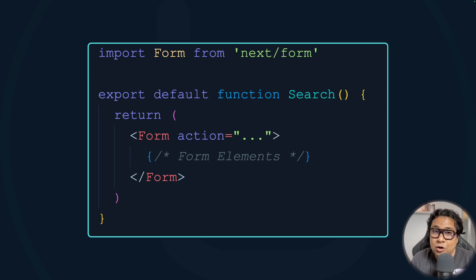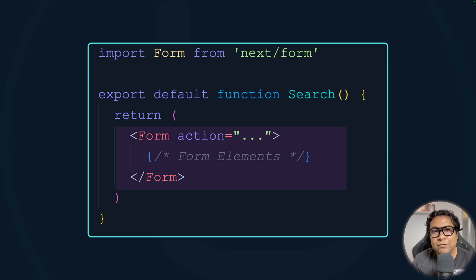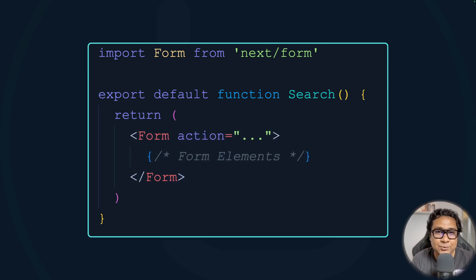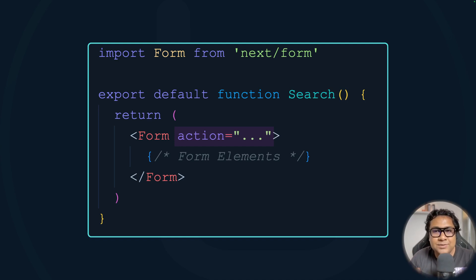The Form component of Next.js extends the HTML native form element. Its job is to do client-side navigation on form submission. It's a component you need to import from the 'next/form' package, and then you can use it inside any React component or your Next.js page component. The important fact to note: the Form takes a prop called 'action', and the twist is that action can take two different kinds of values — one is a plain string, and the second is a function.